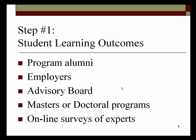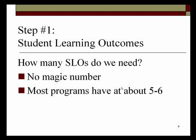But how many student learning outcomes should a degree program have? There's no magic number that would be right for all programs. Try looking at the SLOs of other similar programs to see if there seems to be a typical number. Most programs have about five or six SLOs on average, but you can have more or fewer.